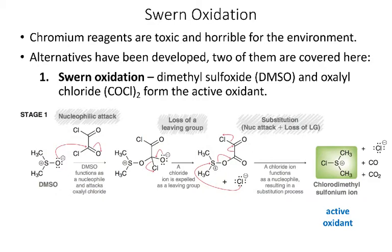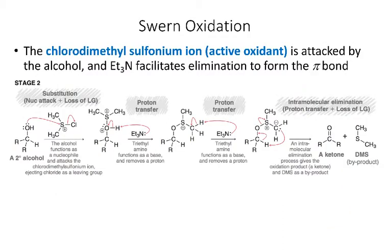Chromium compounds are very efficient oxidizing agents, but a huge disadvantage is that they're toxic and terrible for the environment. In recent years, chemists have looked for green alternatives. One is called Swern oxidation, which uses dimethyl sulfoxide (DMSO) and oxalyl chloride (COCl₂). The reaction between these two compounds forms the active oxidizing agent. A second reagent needed in Swern oxidation is triethylamine, used in stage two, where the active oxidizing agent reacts with the alcohol to give the oxidized product.